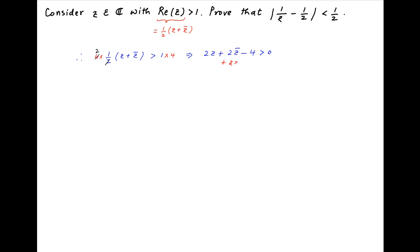Now, on the left-hand side, add and subtract the product of z and its conjugate. Therefore, this inequality can be written as 2z minus z times its conjugate, plus 2 times the conjugate of z minus 4, plus the product of z and its conjugate, is greater than 0.